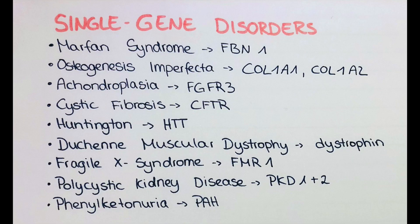Now let's talk about single gene disorders. The first one is Marfan syndrome, where there is a mutation of the FBN1 gene, which is responsible for the creation of fibrillin, which in turn is part of the connective tissue. So it is a connective tissue disorder. Defects result in abnormal connective tissue, causing individuals to present with stretch marks usually of red color on the back, and hyperflexible joints and long arms.